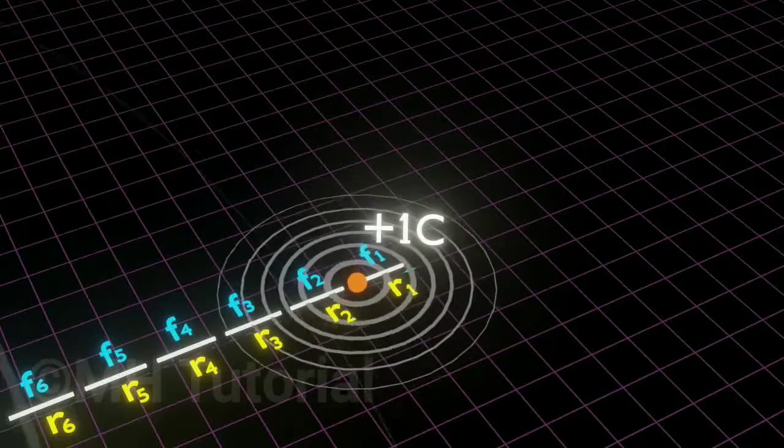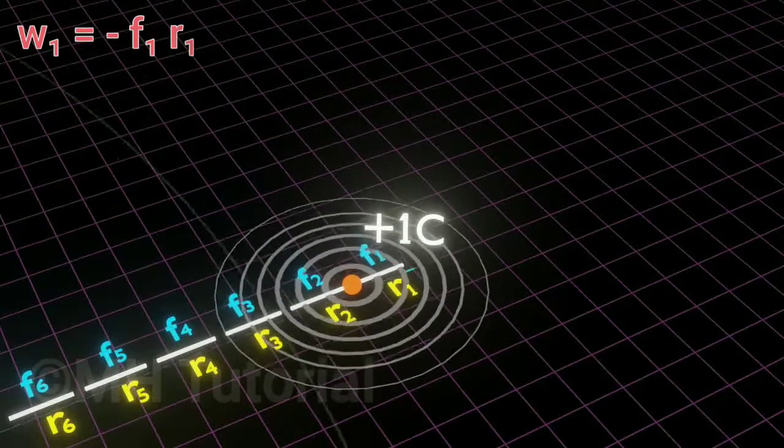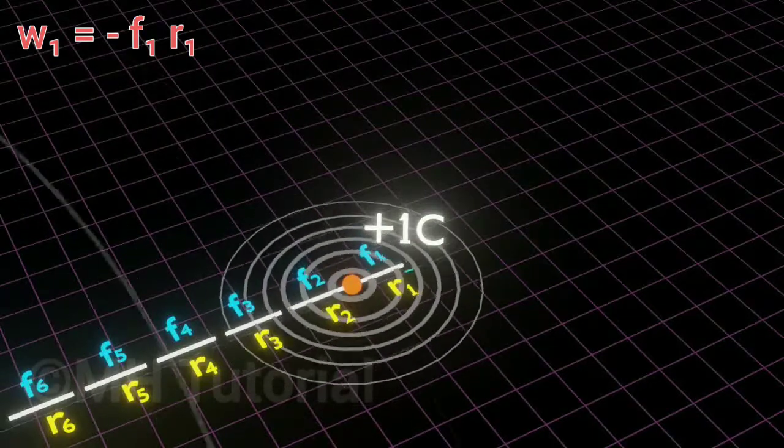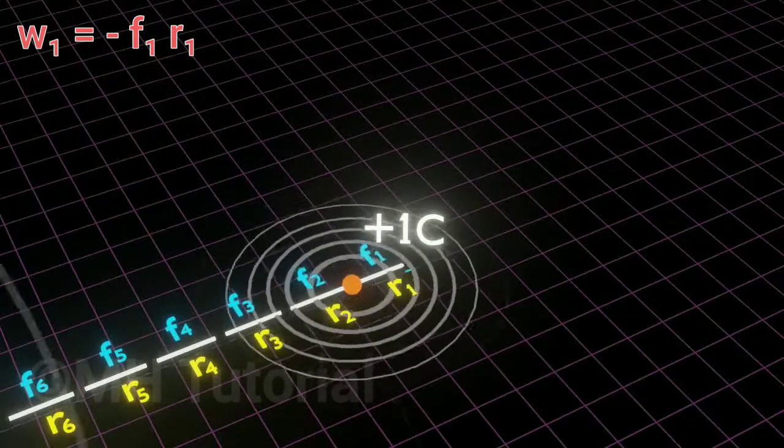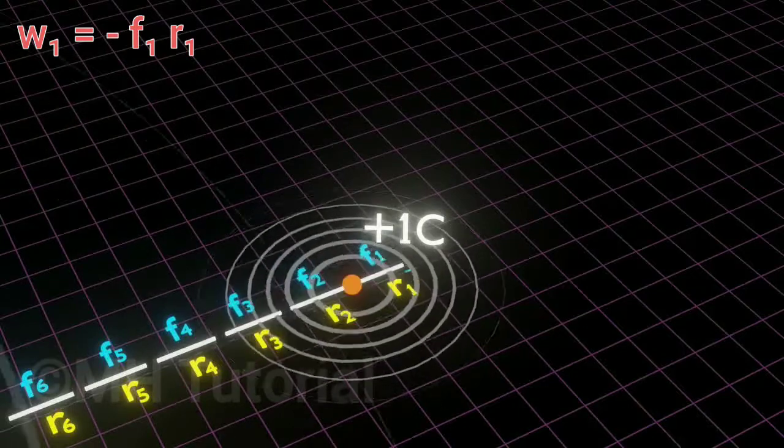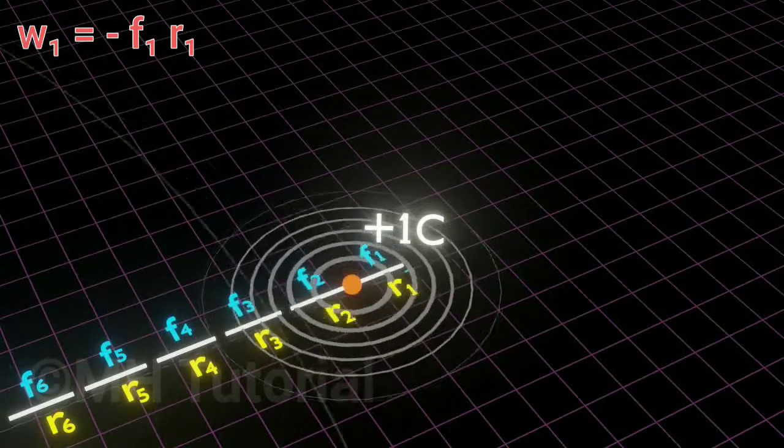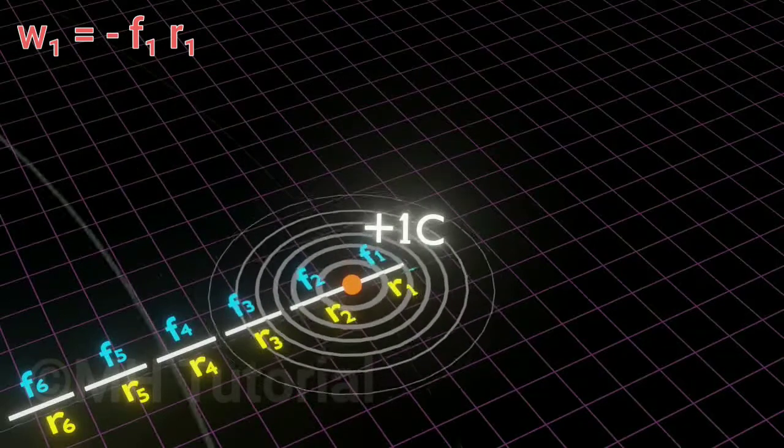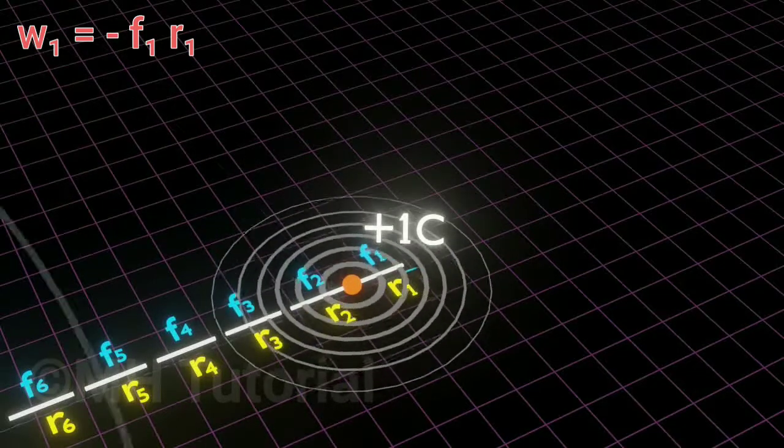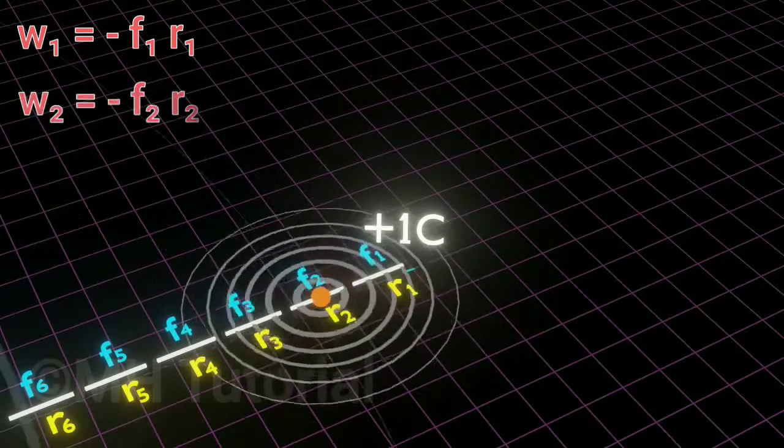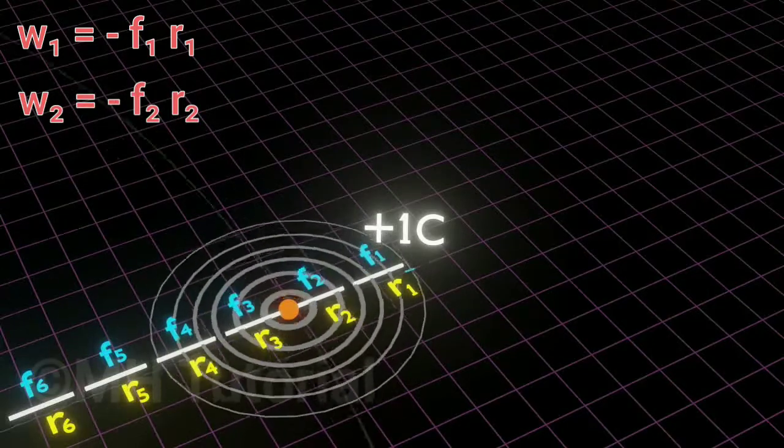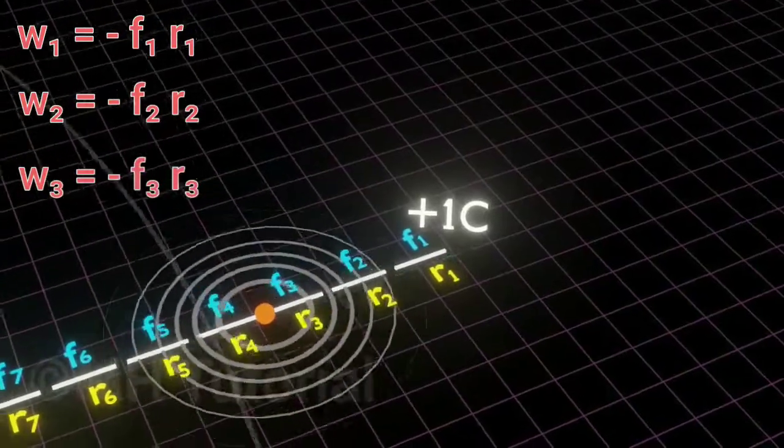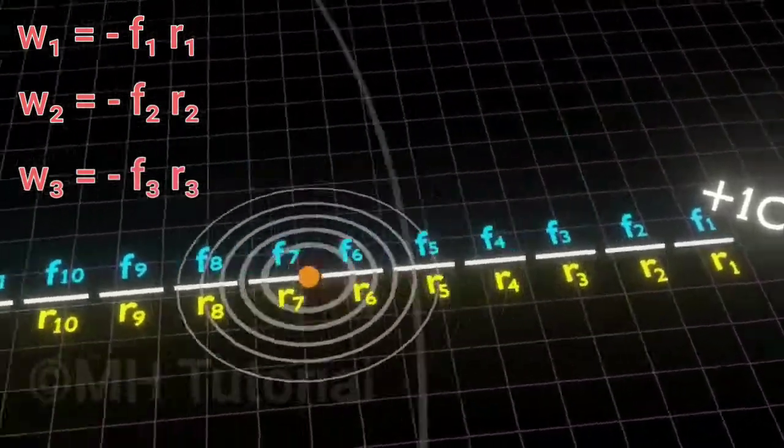Then work done on path R1 is W1, which equals minus F1 times R1. The minus sign arises because the force and displacement are in opposite directions—force is radially outward and displacement is radially inward. Thus W1 equals minus F1 R1. Similarly, for path R2, work done W2 equals minus F2 R2; for path R3, W3 equals minus F3 R3, and so on.